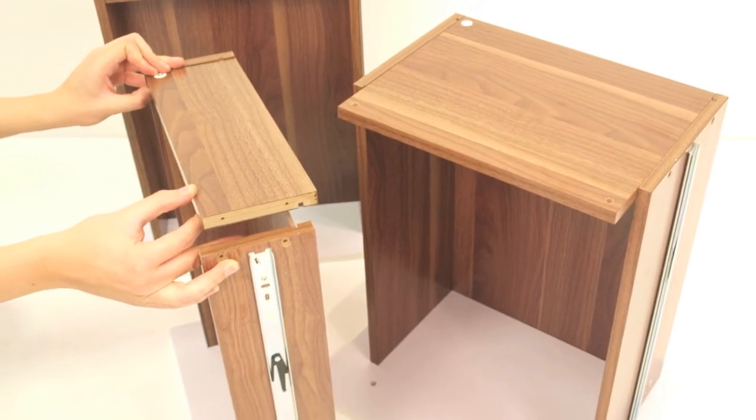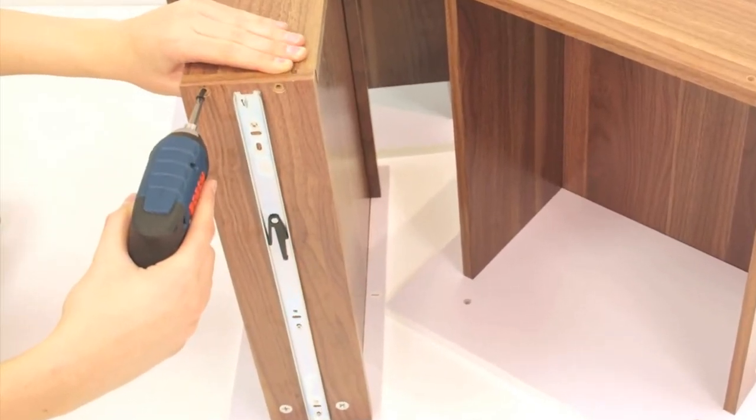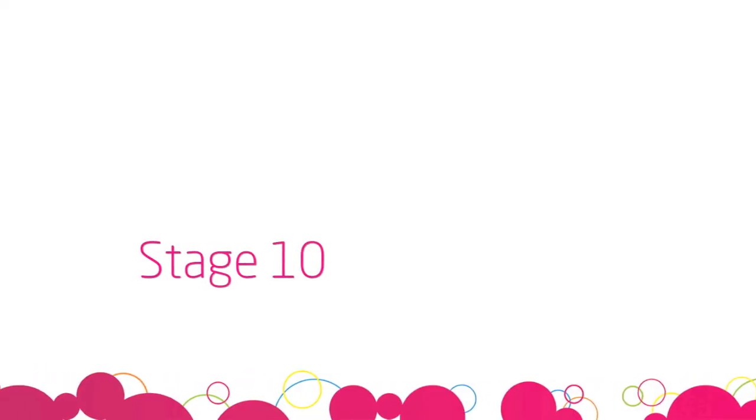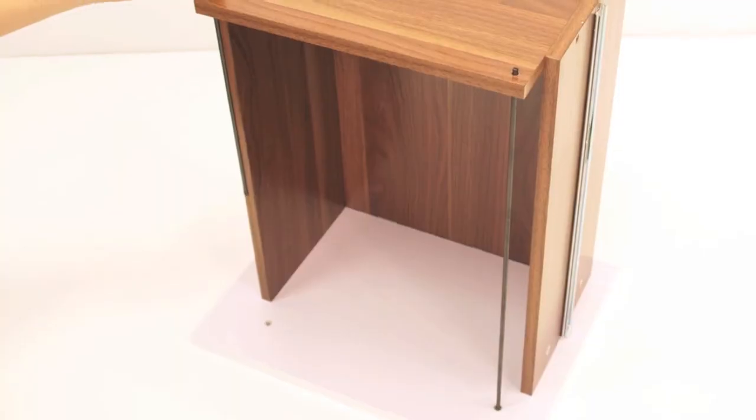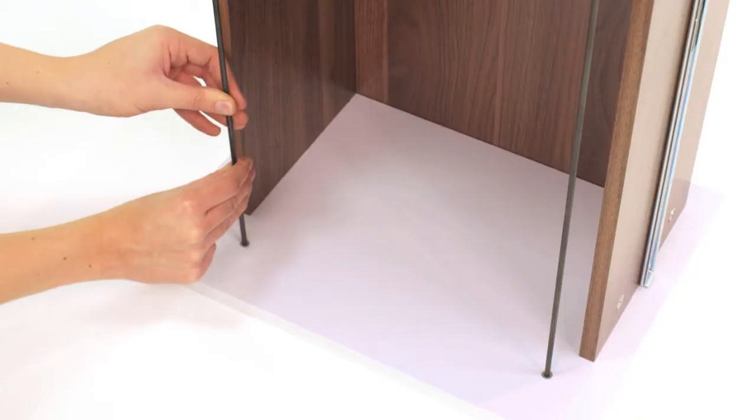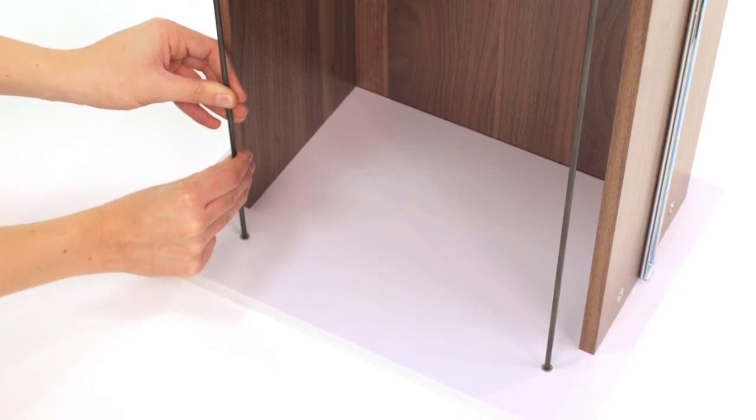Place the drawer back panels into position and secure using the screws labelled number 9. Next, insert the filing rods through the drawer back panel and screw into the plastic socket in the large drawer front.